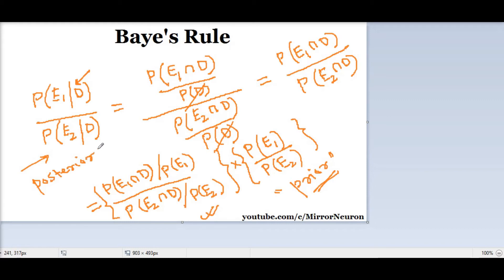That means: what effect did new information D bring to this ratio — the probability of E1 divided by probability of E2 — what influence did it bring to this quotient? That is all about Bayes rule: we want to find this factor that shows how it is going to influence the original ratio. So this is the prior and this is called the posterior.